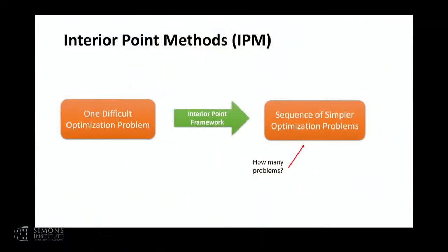To understand the running time of interior point methods, it's helpful to break down the analysis into two pieces: one, how many sub-problems do you solve, and two, how hard are those sub-problems? For the interior point methods we've seen for linear programming, we've talked a lot about the number of iterations — that's how many problems we solve — and in each iteration the complexity is determined by performing some sort of Newton's method: forming a linear system and solving it.